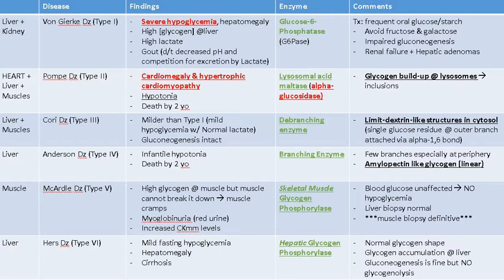Because of severe hypoglycemia due to the enzyme deficiency, you are forced into anaerobic glycolysis since there isn't enough glucose for aerobic glycolysis, resulting in high lactate in the serum. Gout also occurs, primarily because lactate competes with uric acid for excretion, and also due to the decreased pH from lactic acid buildup in the blood.